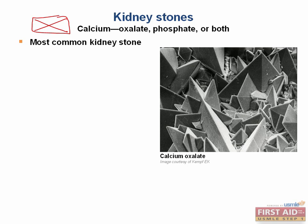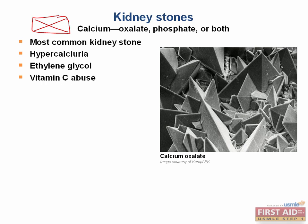Calcium oxalate stones occur more in conditions associated with hypercalciuria. Ingestion of ethylene glycol leads to calcium oxalate formation because ethylene glycol is metabolized to oxalic acid. Vitamin C causes increased urinary excretion of oxalate, leading to calcium oxalate stone formation. In Crohn's disease, fat malabsorption causes fat to bind calcium in the small intestines, so calcium cannot bind oxalate, and the absorbed oxalate precipitates in the urine. Calcium phosphate precipitates in increased pH, while calcium oxalate precipitates in decreased pH.